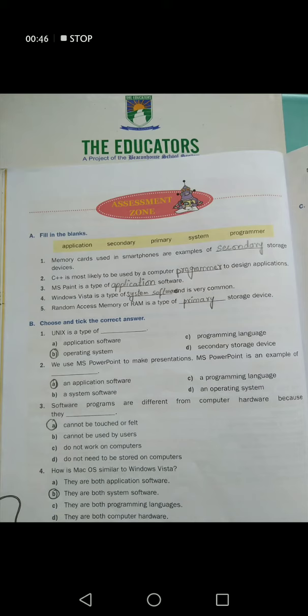Random Access Memory, or RAM, is a type of primary storage device. Now moving on to the choose the correct answer section.